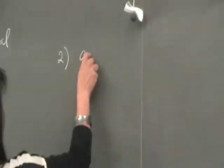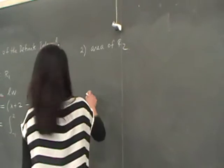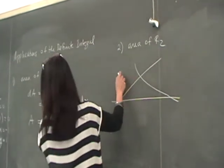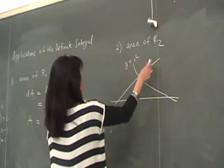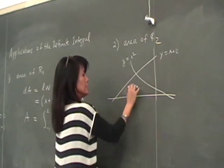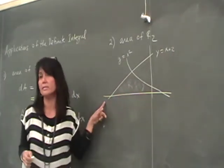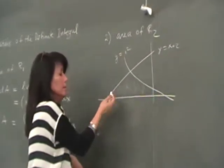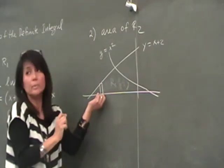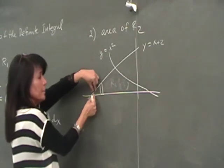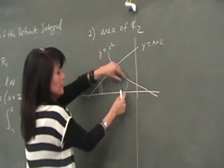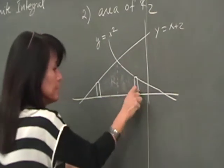Now let's find the area of region 2. Region 2 is bounded by the parabola y equals x squared, the line y equals x plus 2, and the x-axis. If we try vertical strips, we notice that as we run the strip across, the boundary changes — on one side it's the line, and once we cross the intersection point, the boundary becomes the parabola. So if we insist on vertical strips, we need two separate pieces.